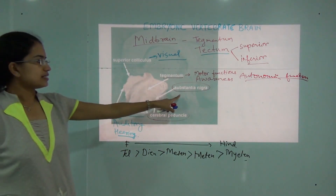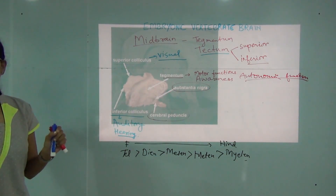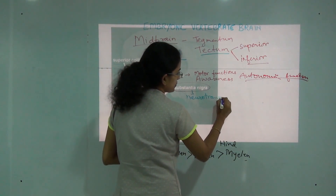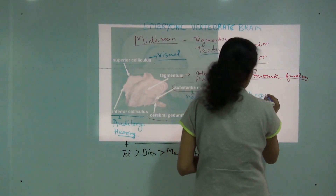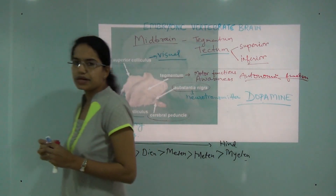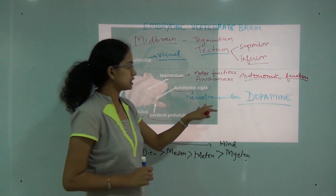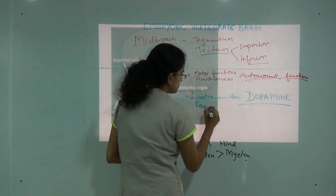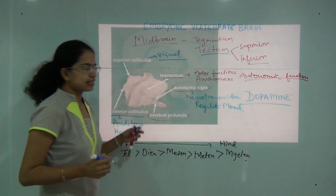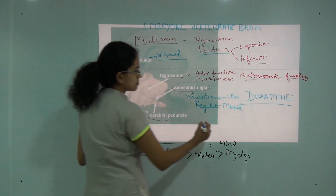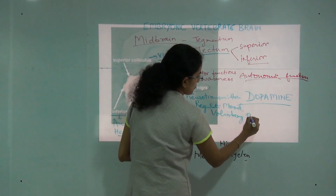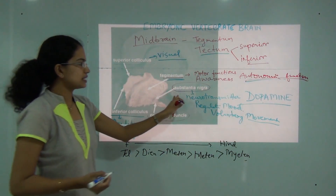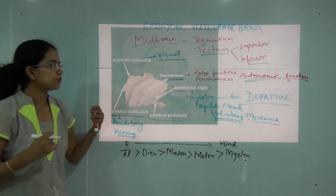Substantia nigra is the next part of the midbrain. Its foremost important function is that it secretes the neurotransmitter dopamine. Besides that, substantia nigra also helps to regulate mood and controls voluntary movement. Under tectum, automatic functions are controlled, while under substantia nigra, voluntary movements that you willingly try to do are being controlled.